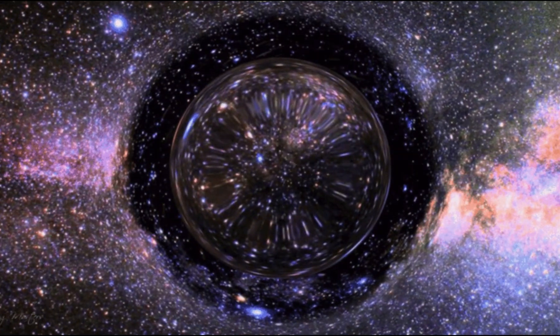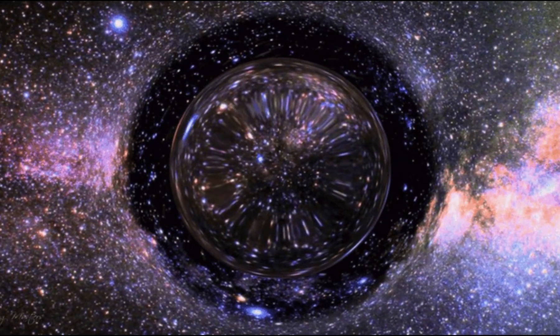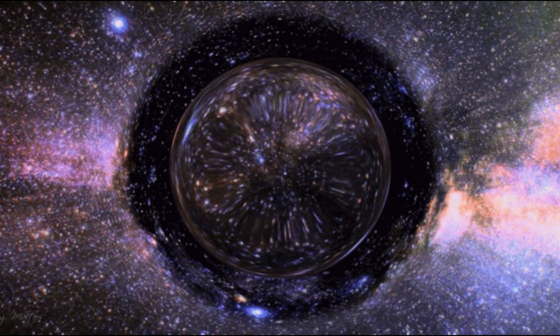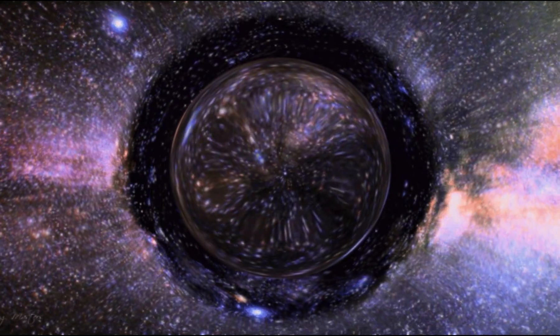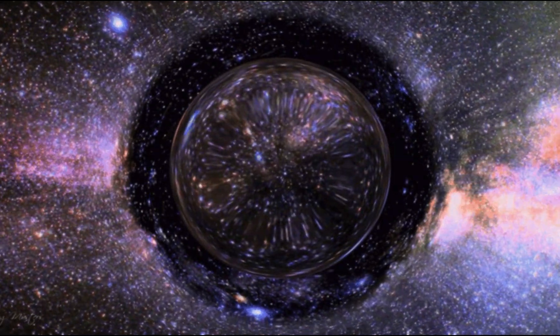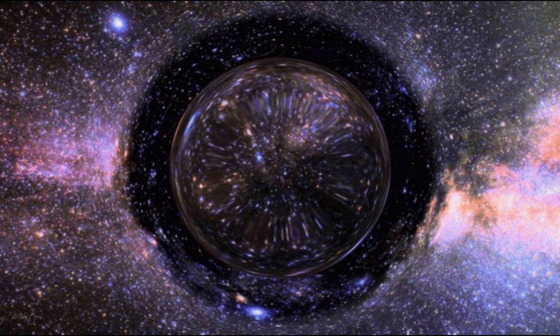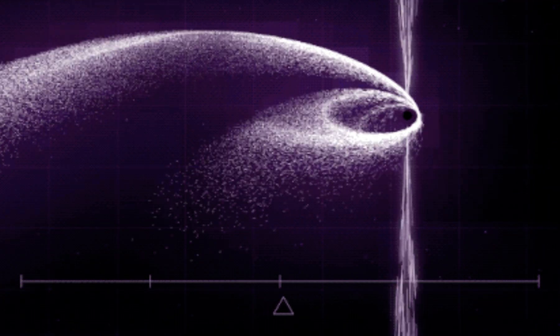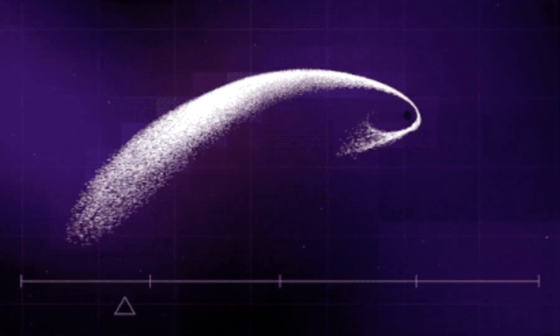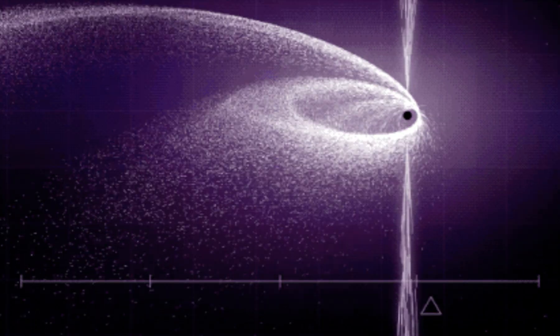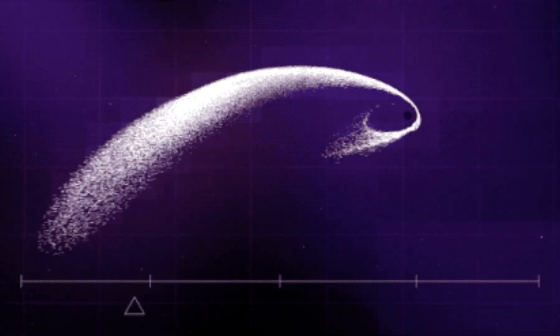Wormholes would collapse instantly, unless they're held open by something exotic. Something like negative mass. And while we've never observed negative mass, physics doesn't rule it out entirely. Some theorists even believe that microscopic wormholes might already exist, hidden in quantum foam smaller than atoms. If we could ever stabilize one, we might be able to travel across the universe in an instant. But if wormholes exist, who or what might already be using them?